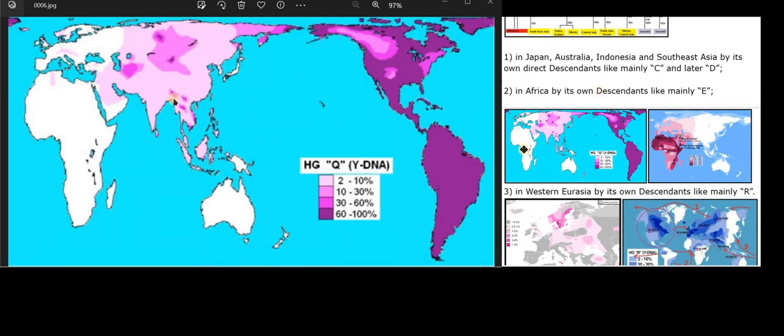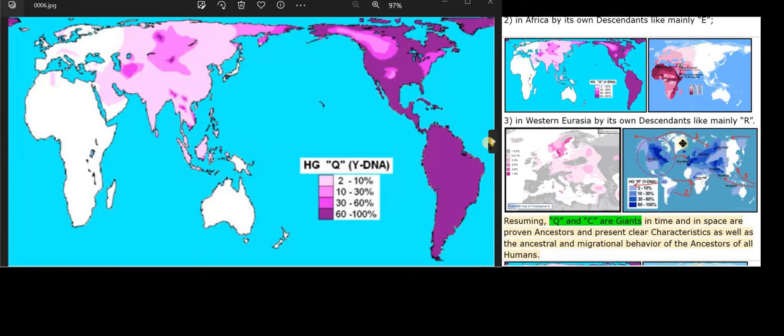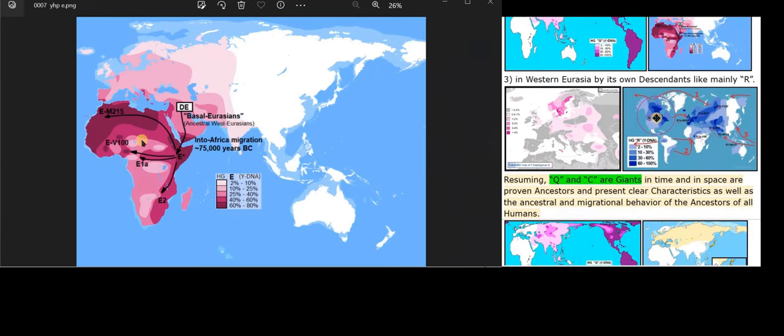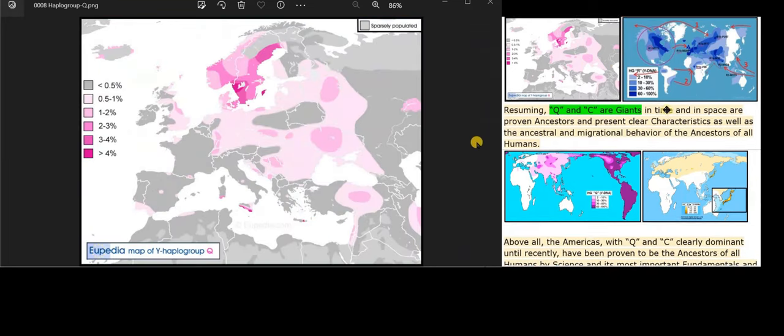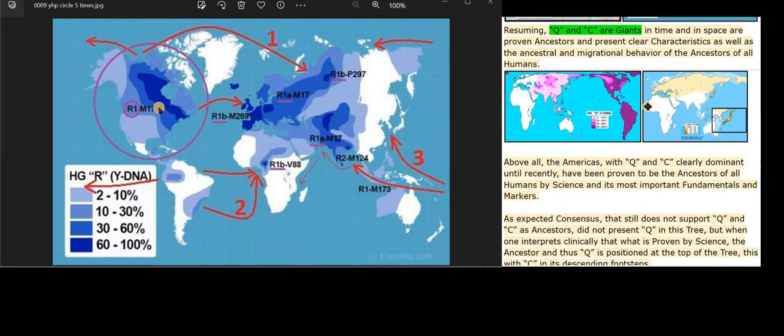Also in Africa by its own descendants like mainly E, and in Western Eurasia by its own descendants like mainly R. Resuming, Q and C are giants in time and in space, are proven ancestors and present clear characteristics as well as the ancestral and migrational behavior of the ancestors of all humans.